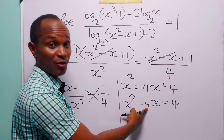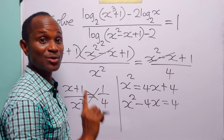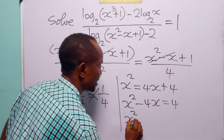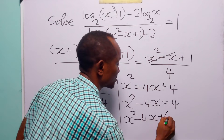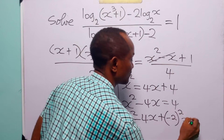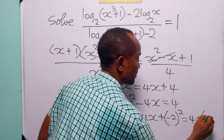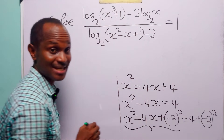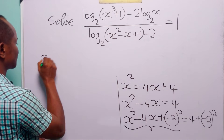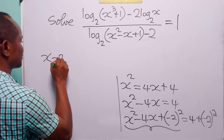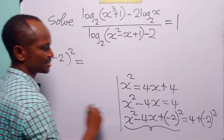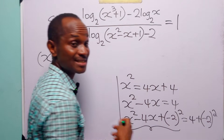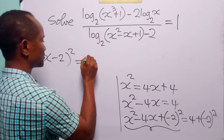Let us divide the coefficient of x by 2, square it, and add to both sides of the equation. When we do that, we have x squared minus 4x plus minus 2 squared. Now we have the perfect square on the left-hand side. This is equal to 4 plus minus 2 squared. Minus 2 squared is equal to 4, and 4 plus 4 is equal to 8.